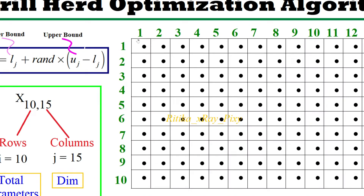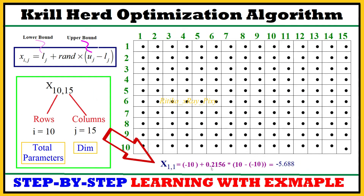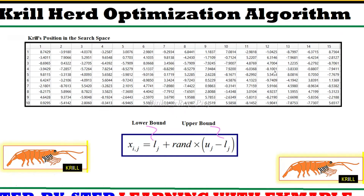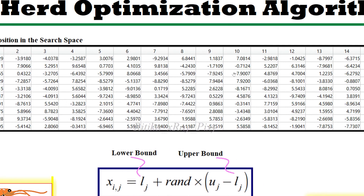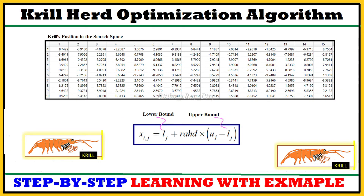So we have 15 dimensions and 10 total parameters. For the first row, first column, the agent position is x11: lower bound is minus 10, upper bound is 10, and the random value is 0.2156. Putting all values into the equation, we obtain the positions one by one for all krills in the search space, as you can see here.